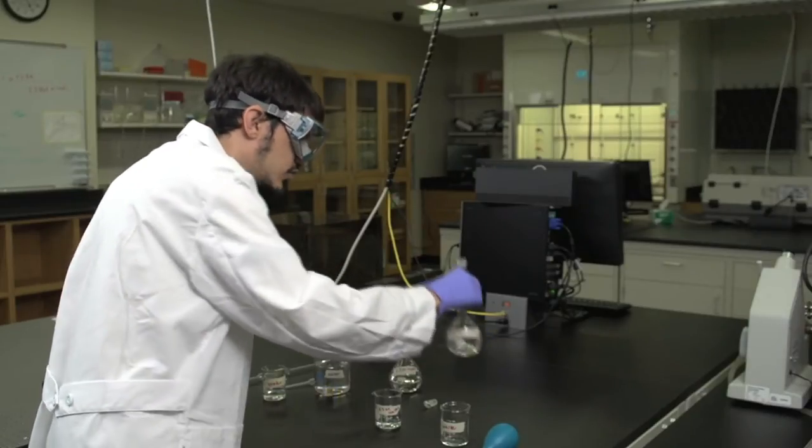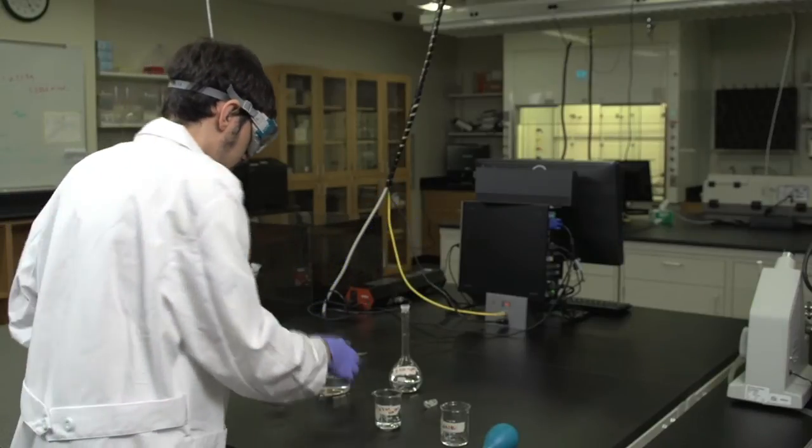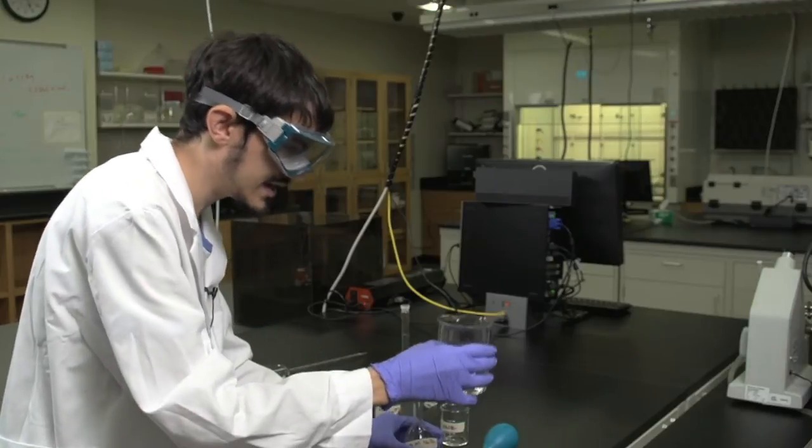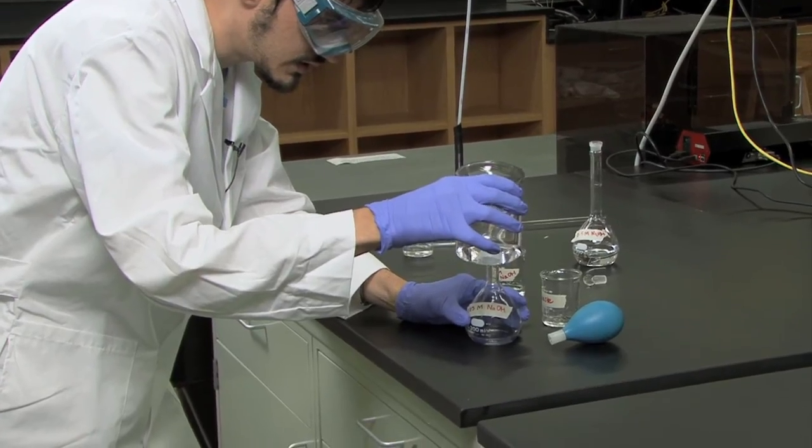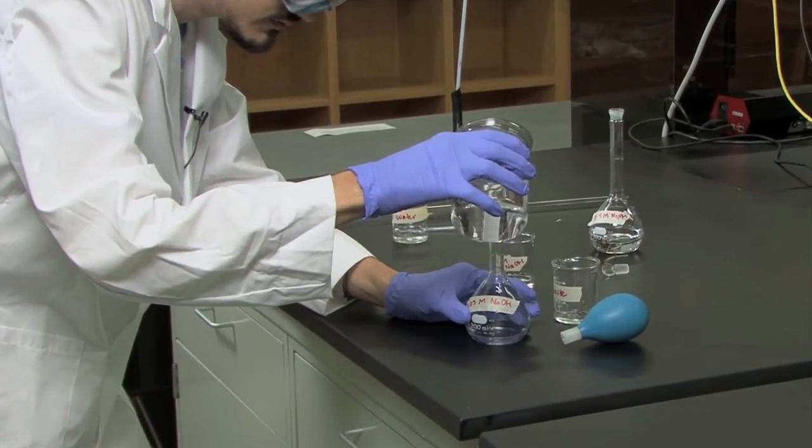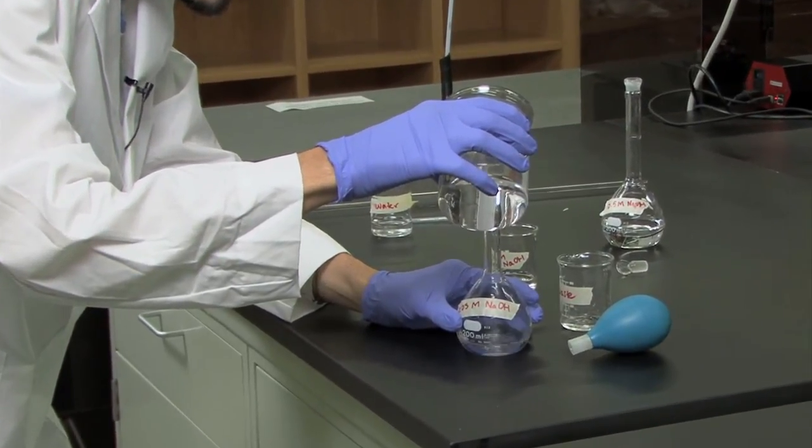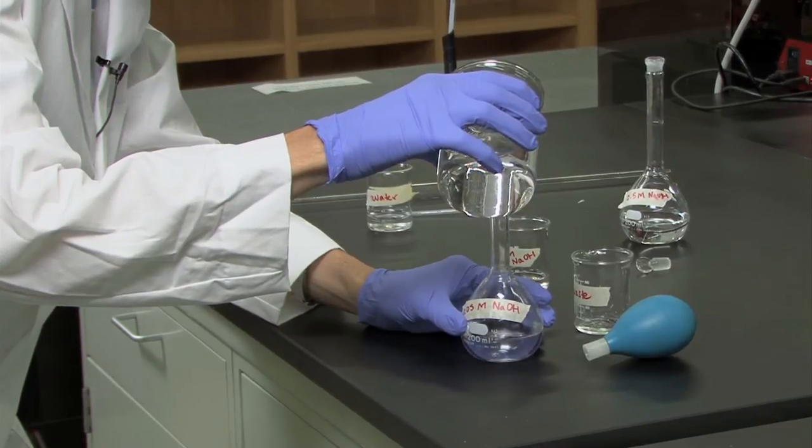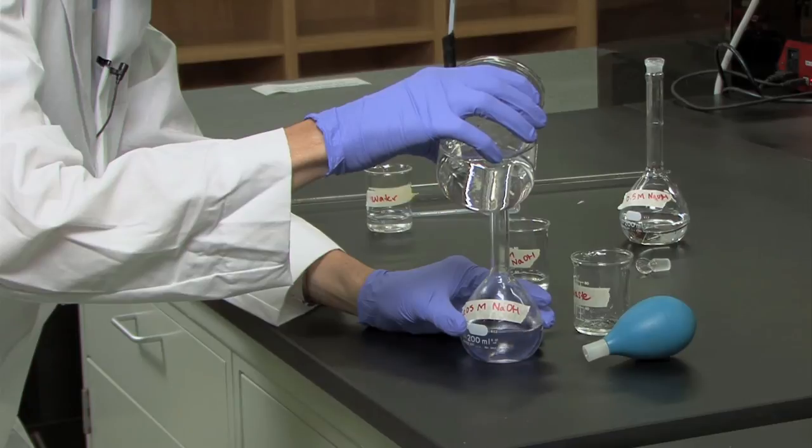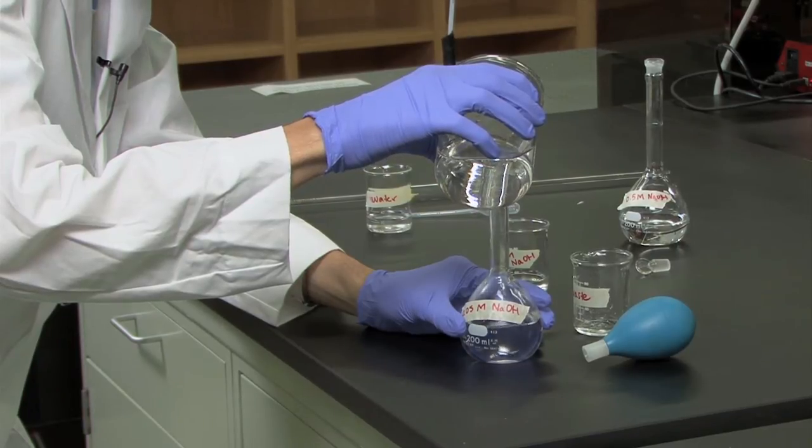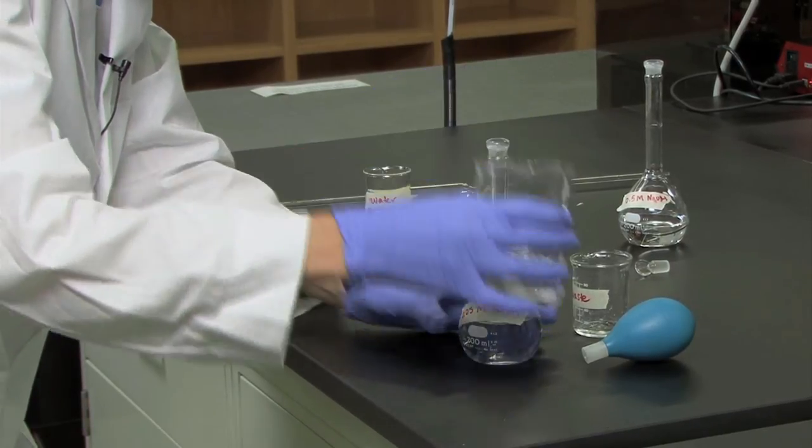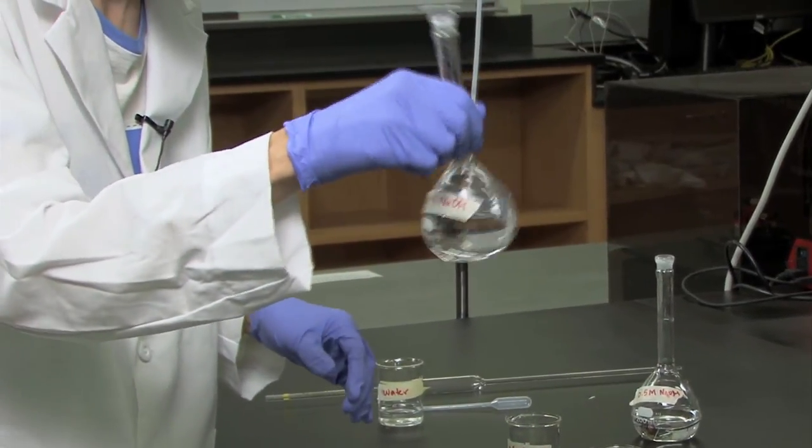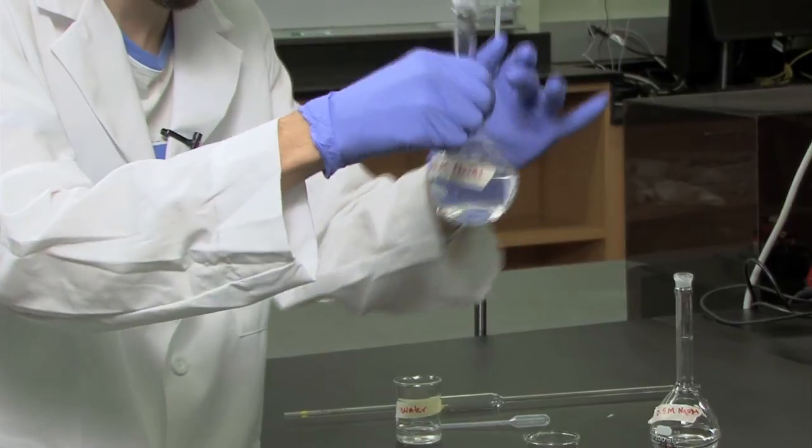You are now ready to dilute the solution. During the first part of diluting, take a water beaker and start pouring water in. You will want to swirl at least several times to aid the mixing process before the water gets up the neck of the flask.